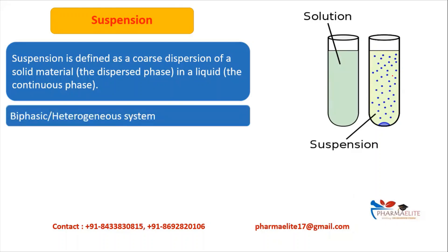Suspension is called a biphasic or heterogeneous system. There are two phases: first is a solid phase and second is a liquid phase. Because there are two phases, it is called biphasic. And because the two phases are different from each other, it is called a heterogeneous system.